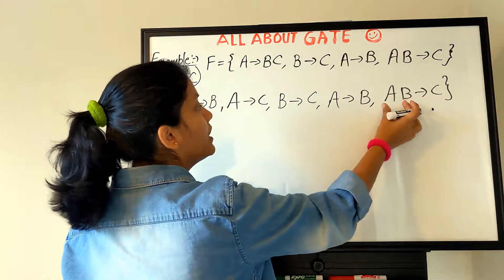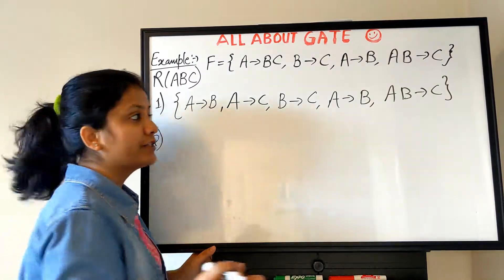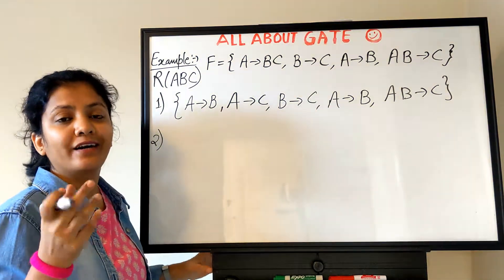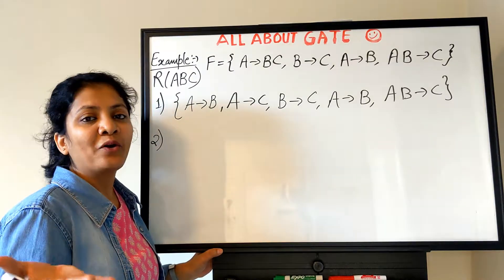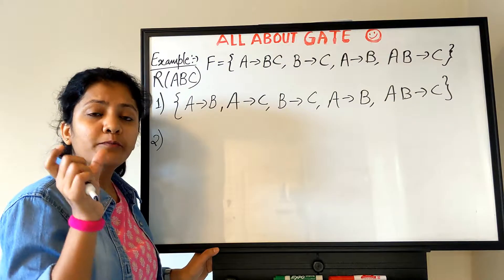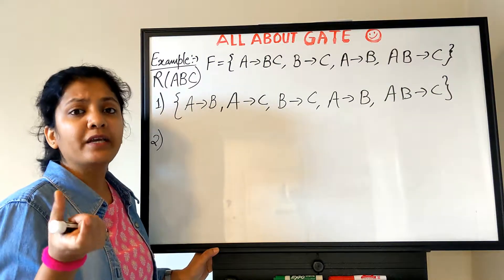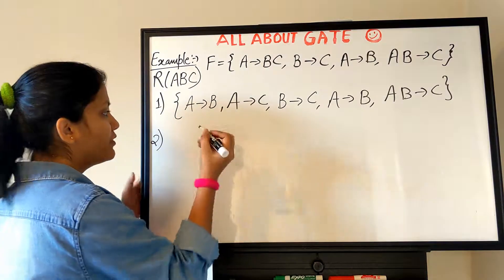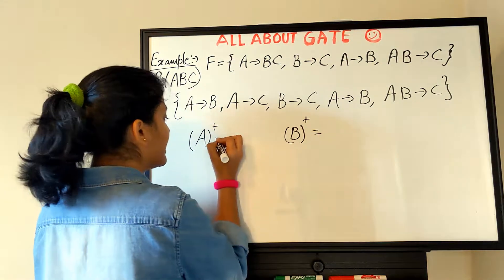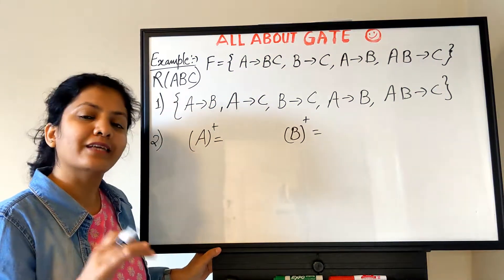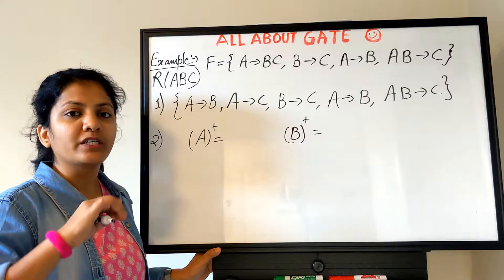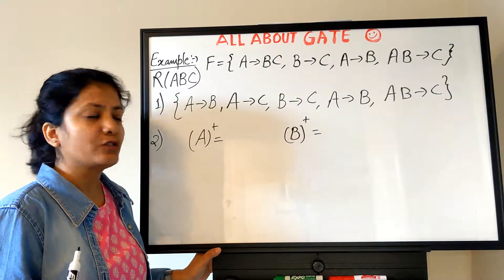The second step says we have to remove the extraneous attribute — the redundant attribute — from the LHS part. All the LHS attributes up till here are single, so there is nothing extra. But here we have two attributes and we have to check whether for determining C we need both A and B together, or whether any one of them can be eliminated. We have to check the power of both A and B.